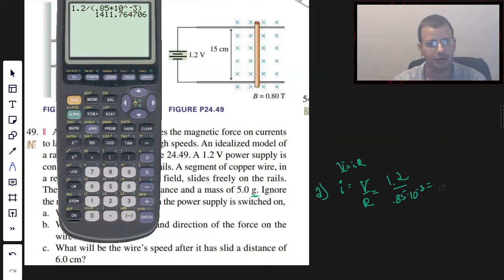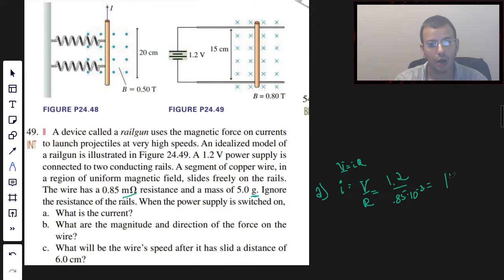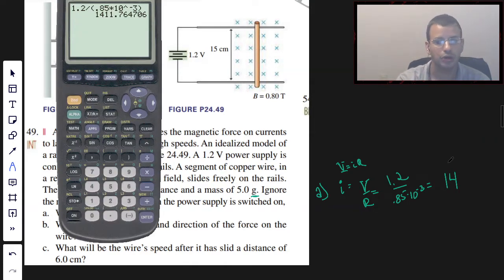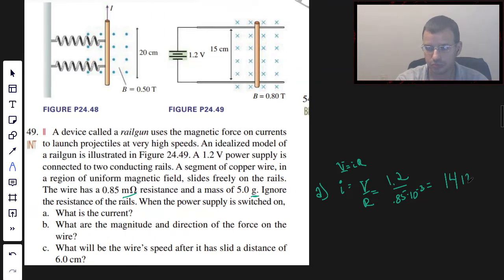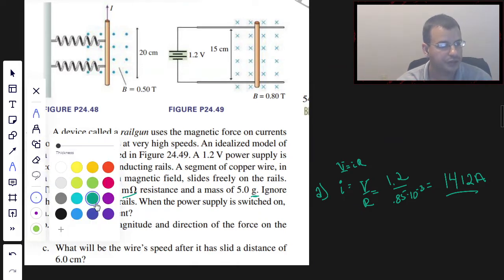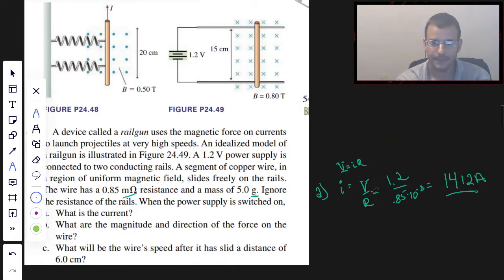Especially for like a 1.2 volt battery. 1,412 amps. Just shows you don't need a lot of voltage to get some crazy results. So what is the current? Right there, not too hard, got it, go team.